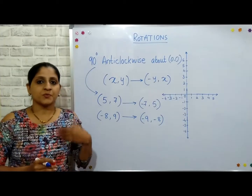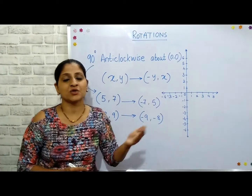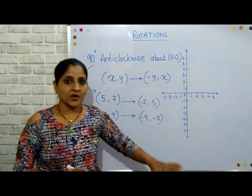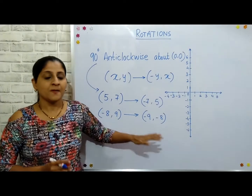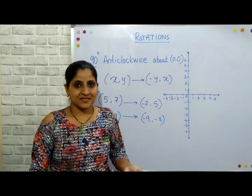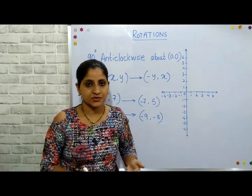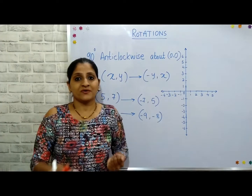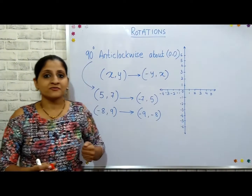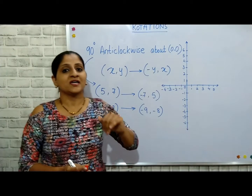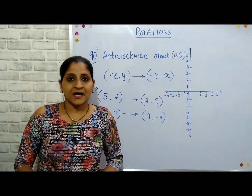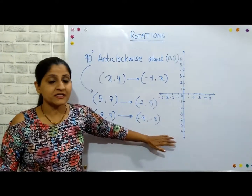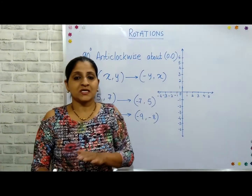So that covers rotating individual points using the rule. Usually in an exam question you are given a complete figure — maybe a triangle, parallelogram, square, or any other figure — and you have to apply the formula for 90-degree anti-clockwise rotation to rotate that entire figure. How we apply the formula and plot it on the graph accordingly is what we will now see.